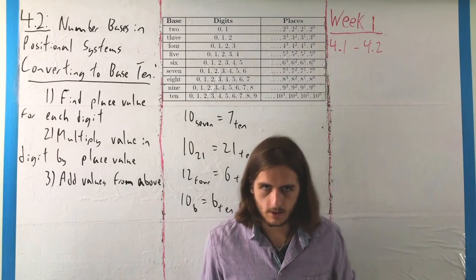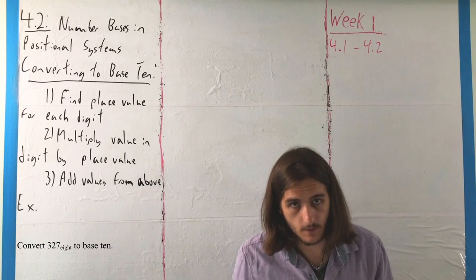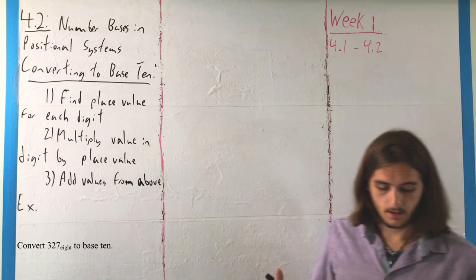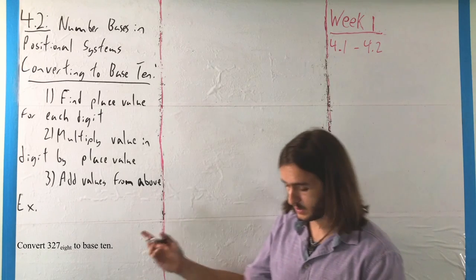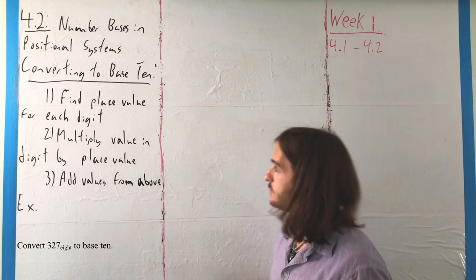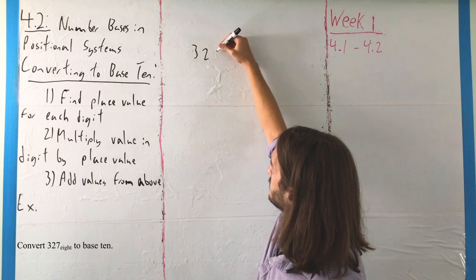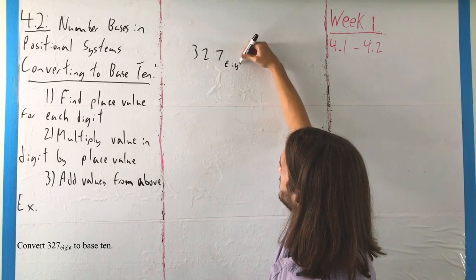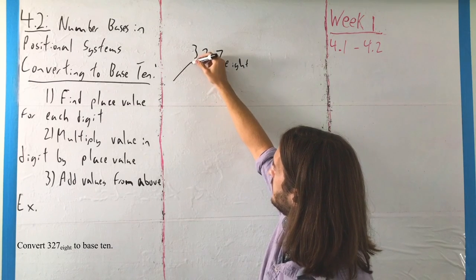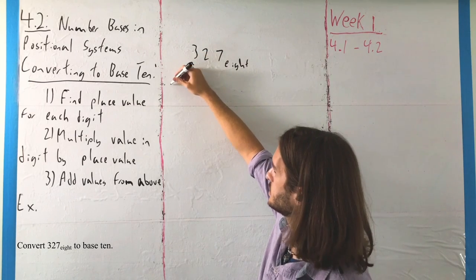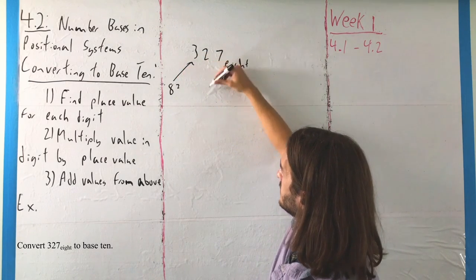So let's take a look at a couple of quick examples. For our first example, we want to convert 327 base 8 to base 10. So if we want to start from the right, we have to understand that when we're looking at the value 327 base 8.